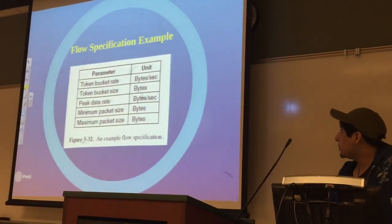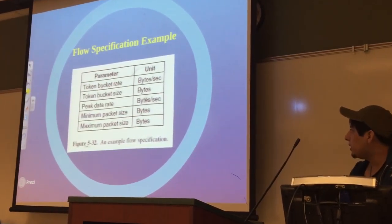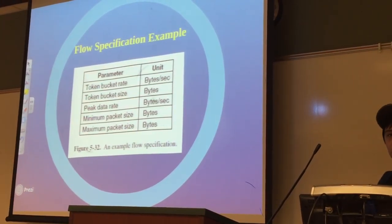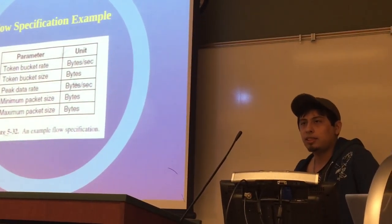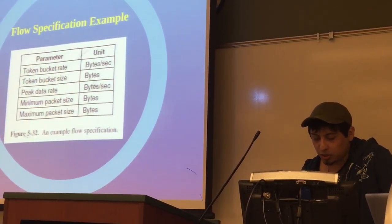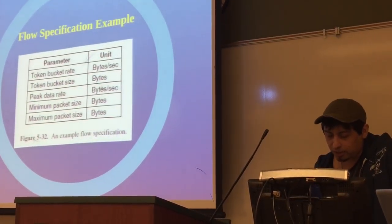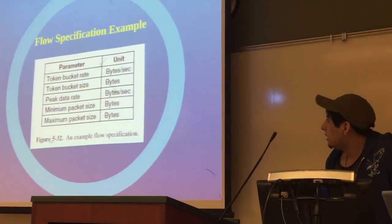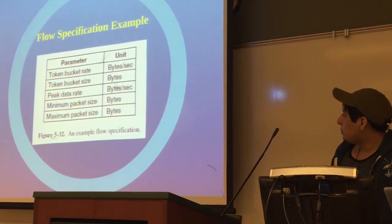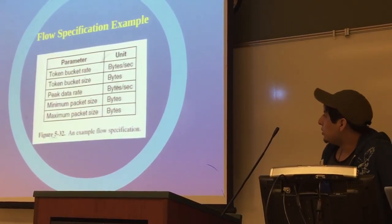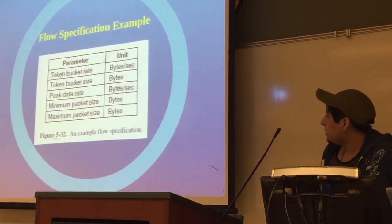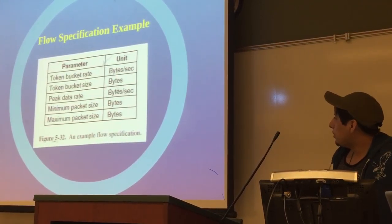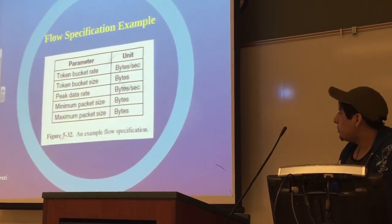This is just an example of flow specification. A token bucket is basically a measure of the unevenness or variations in traffic flow. As you can see, there are five different parameters in this: token bucket rate, token bucket size, peak data rate, minimum packet size, and maximum packet size.